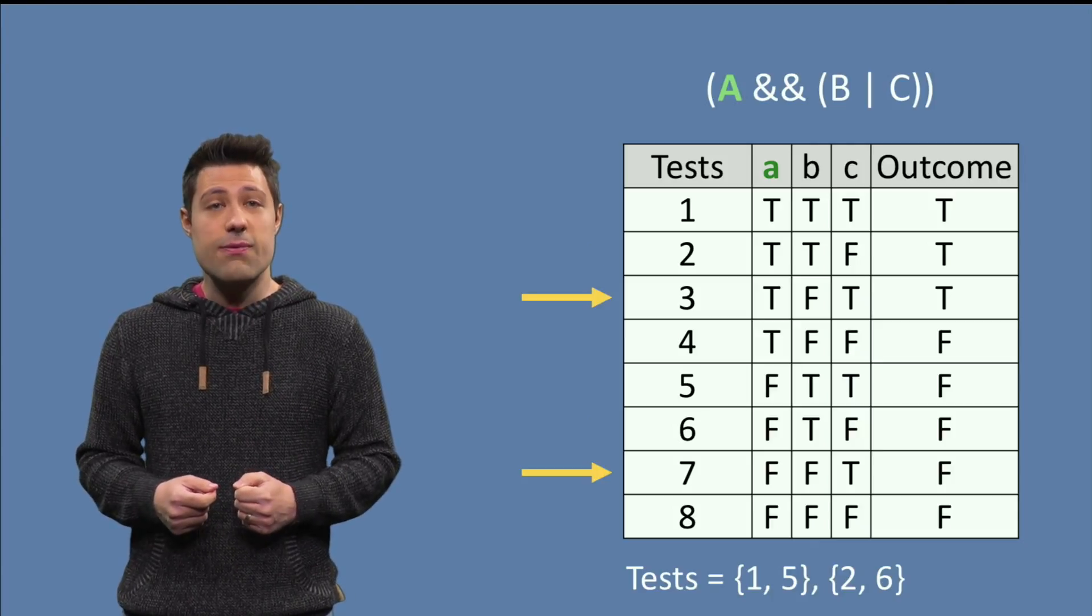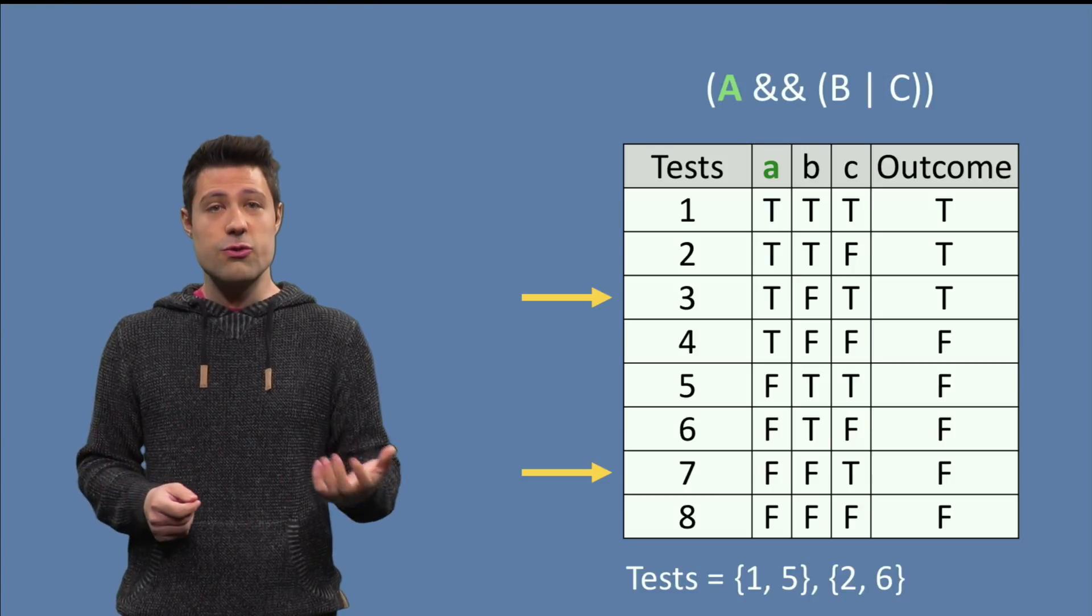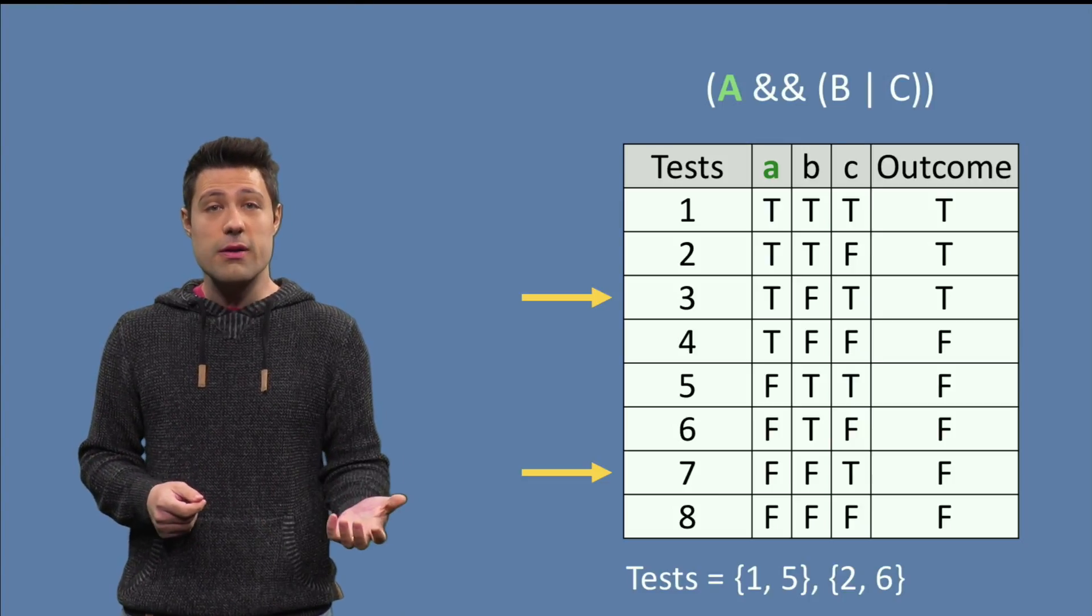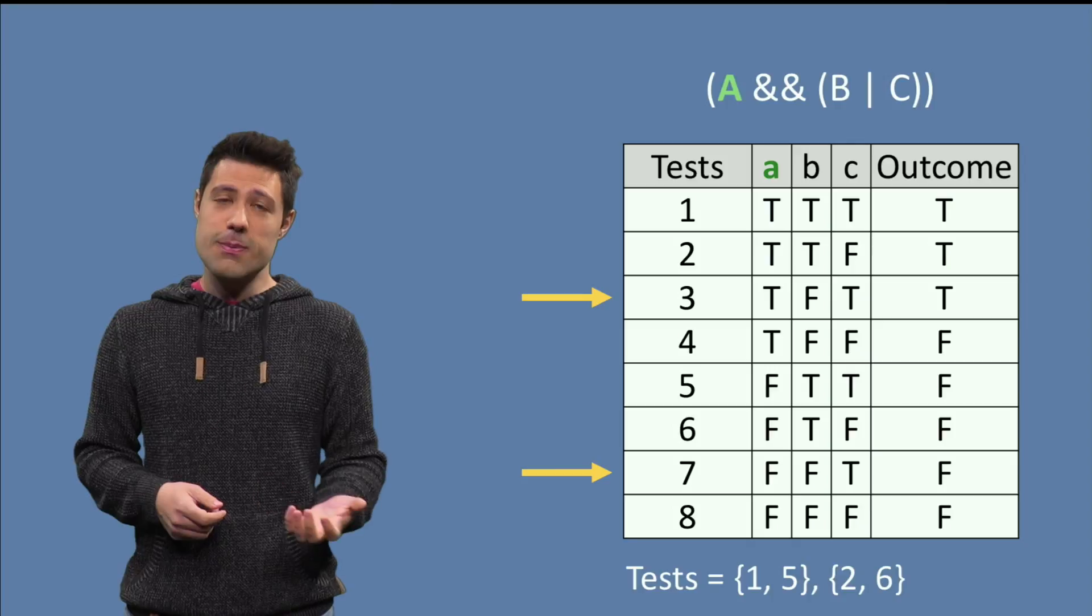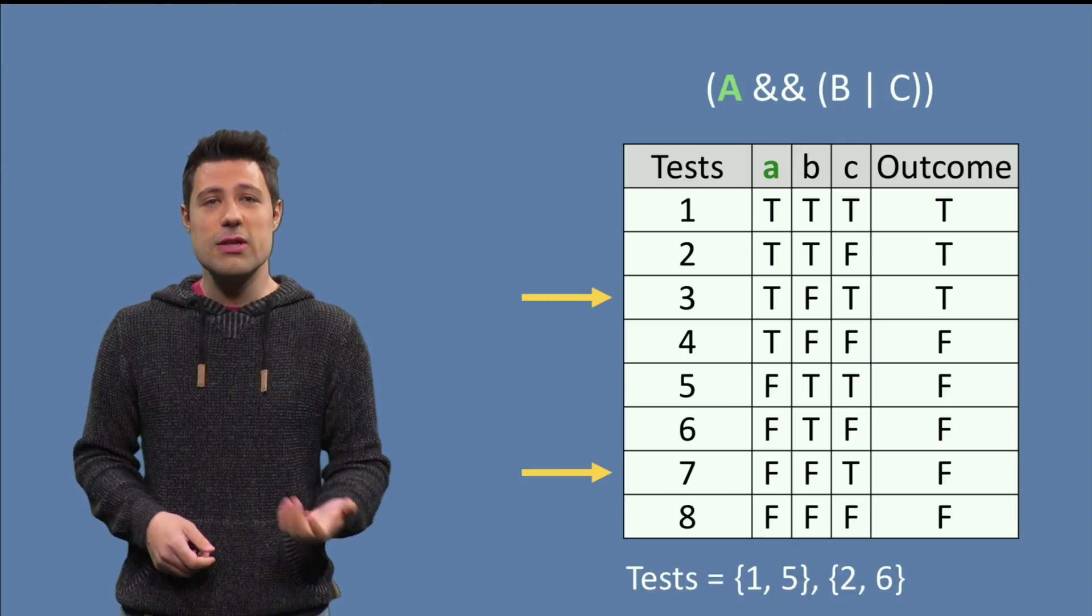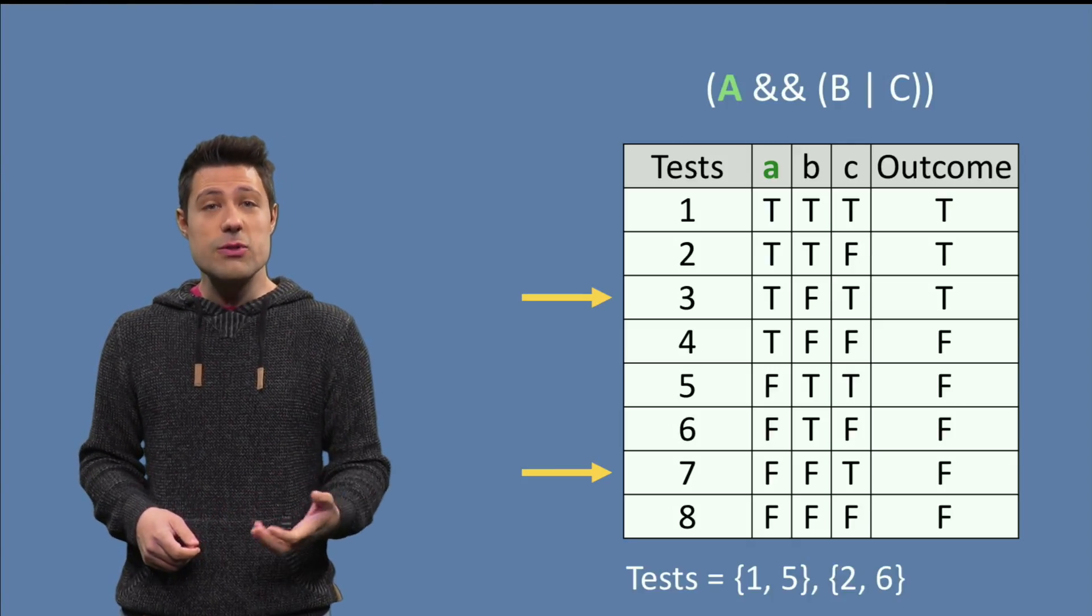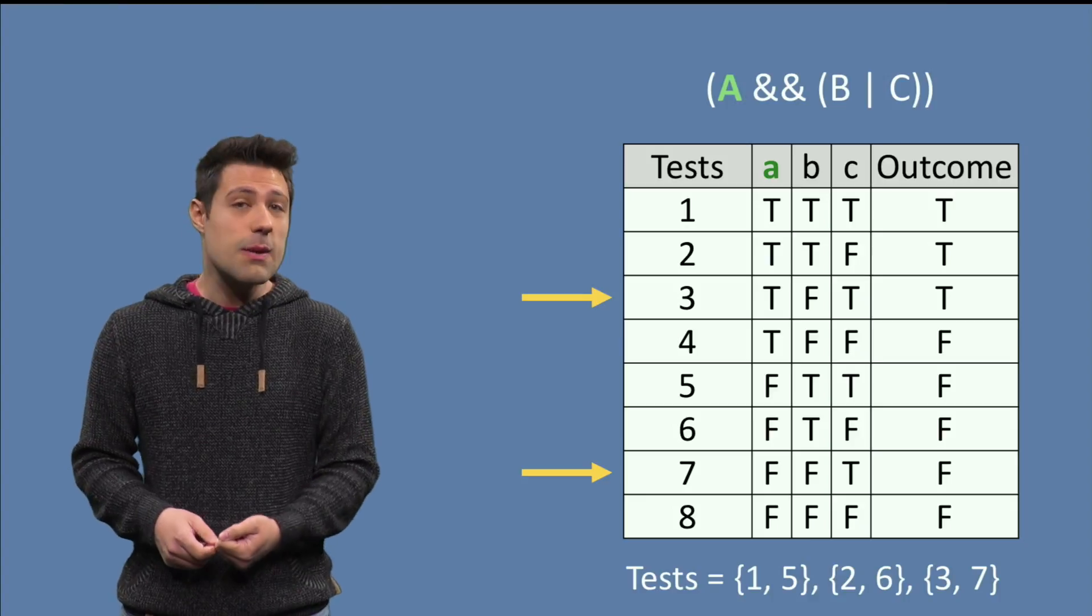Next, row 3. We have A true, B false and C true. Its counterpart is row 7, where A is flipped, B is false and C is true. The outcome is also different, so we keep this pair as well.